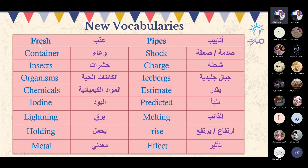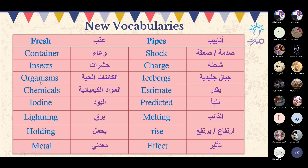بعض الكلمات ممكن تكون مألوفة لديكم وممكن بعض الكلمات تكون جديدة. Fresh — عذب. Container. Insects — حشرات. Organisms — الكائنات الحية. Chemicals — المواد الكيميائية. Iodine — اليود، مادة اليود.